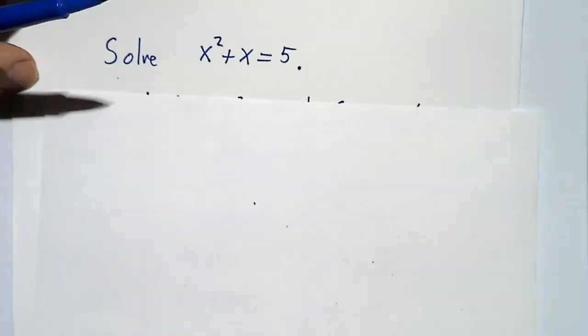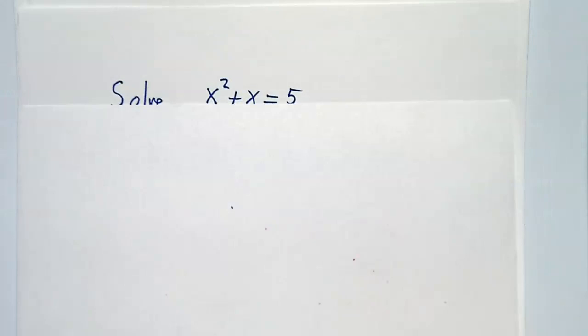The bisection method is the same thing for equations. So suppose we want to solve x squared plus x equals 5.